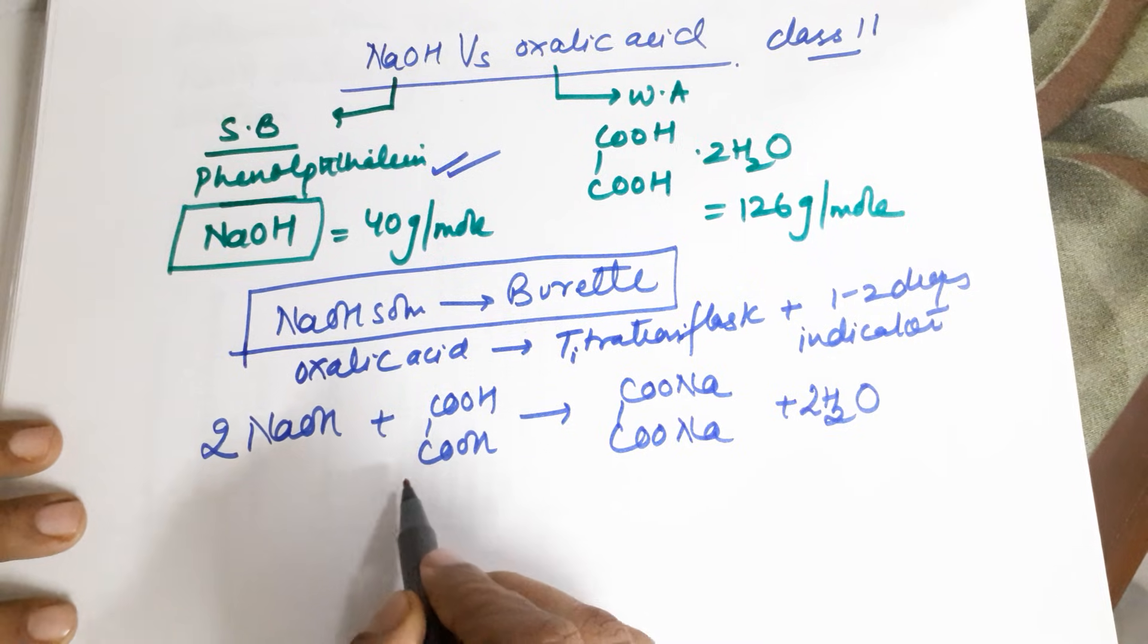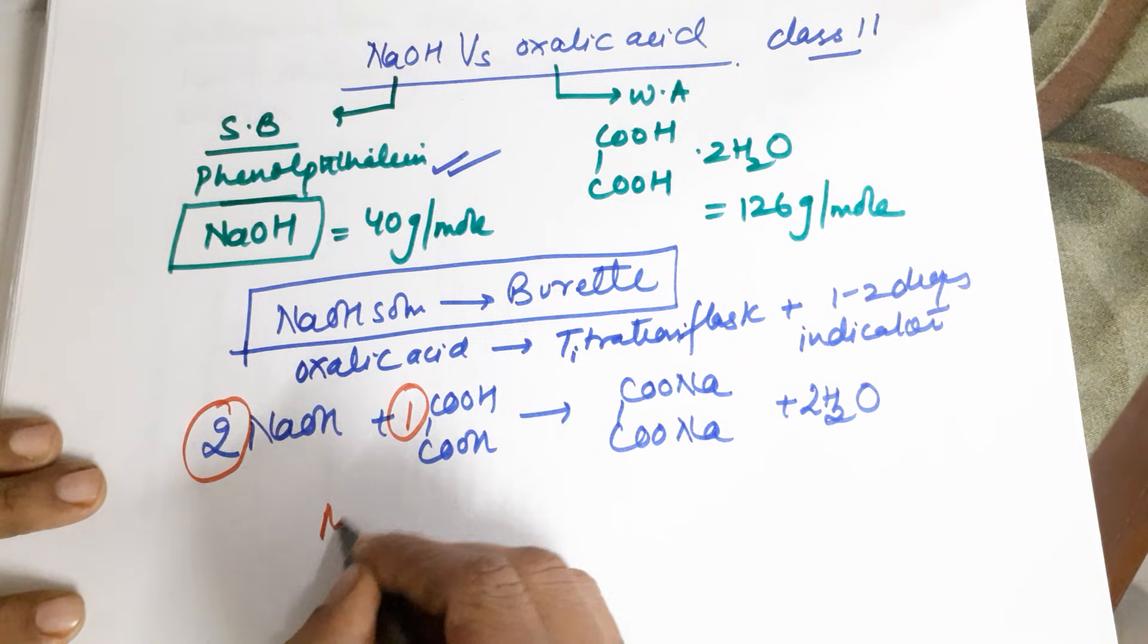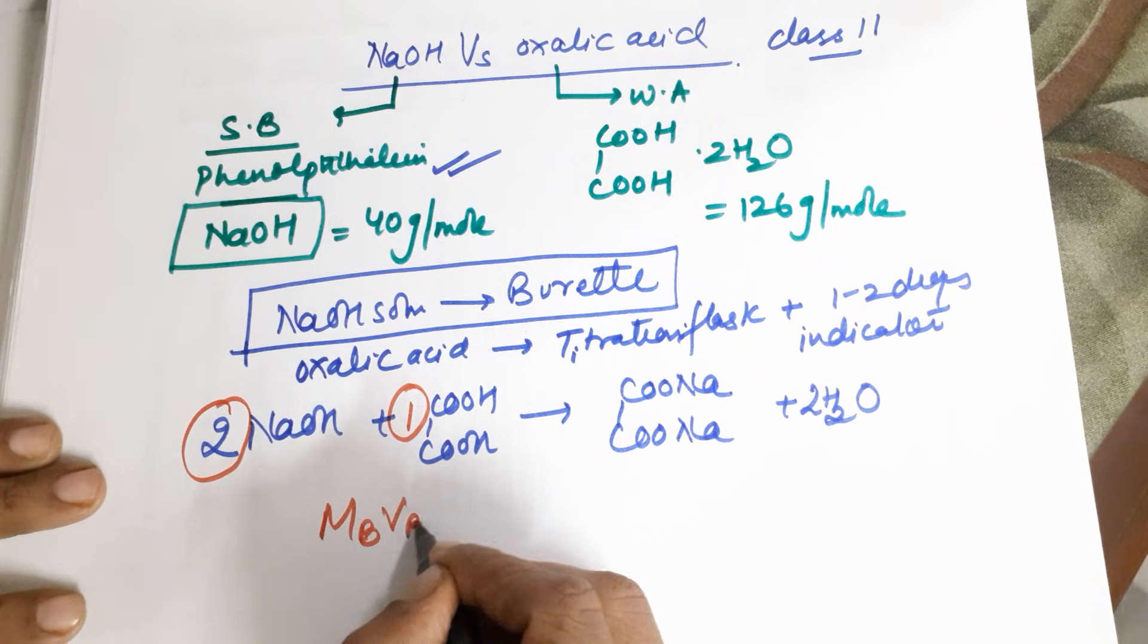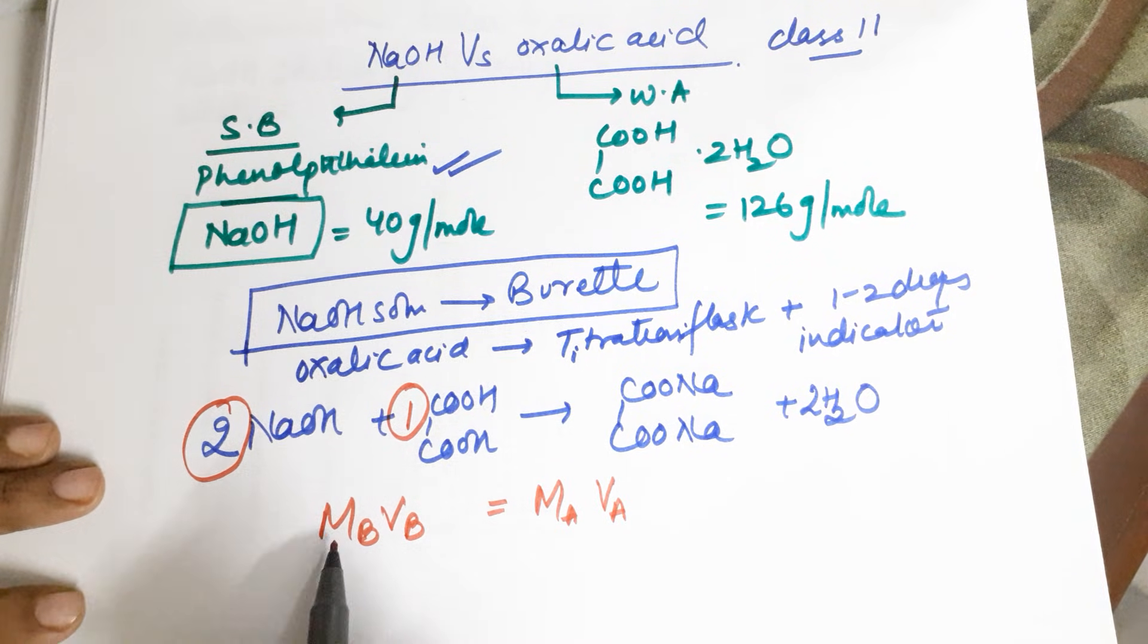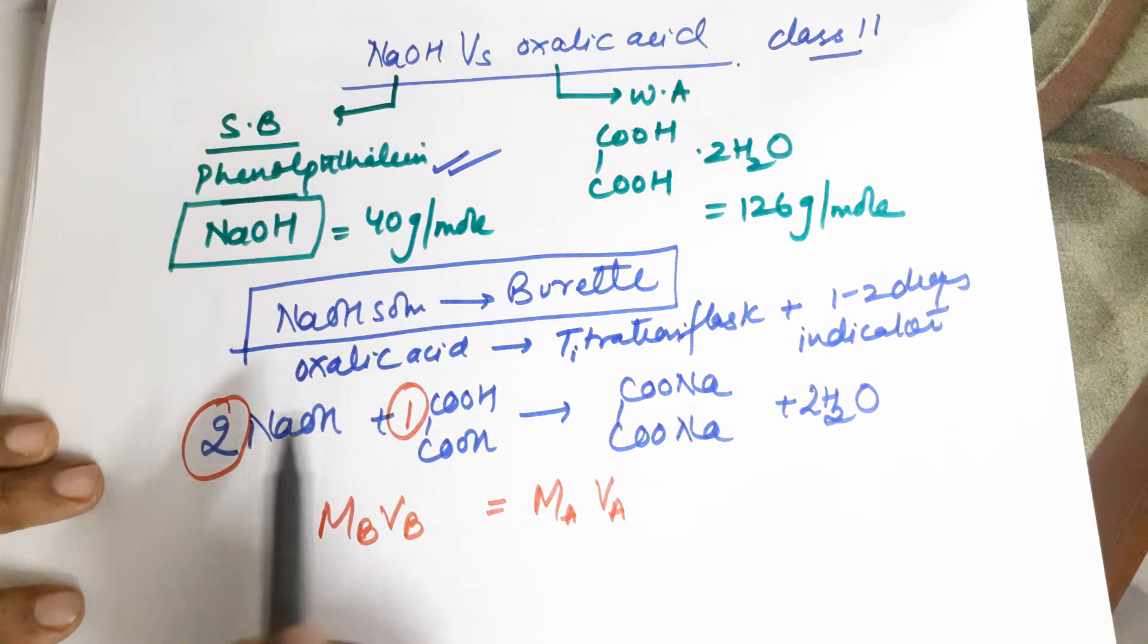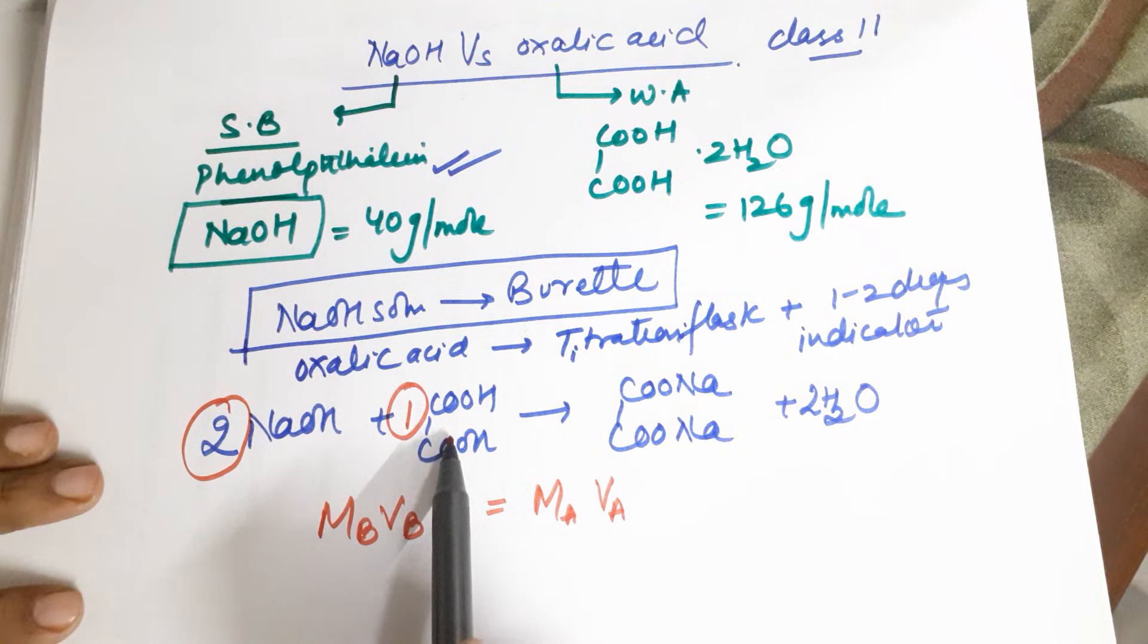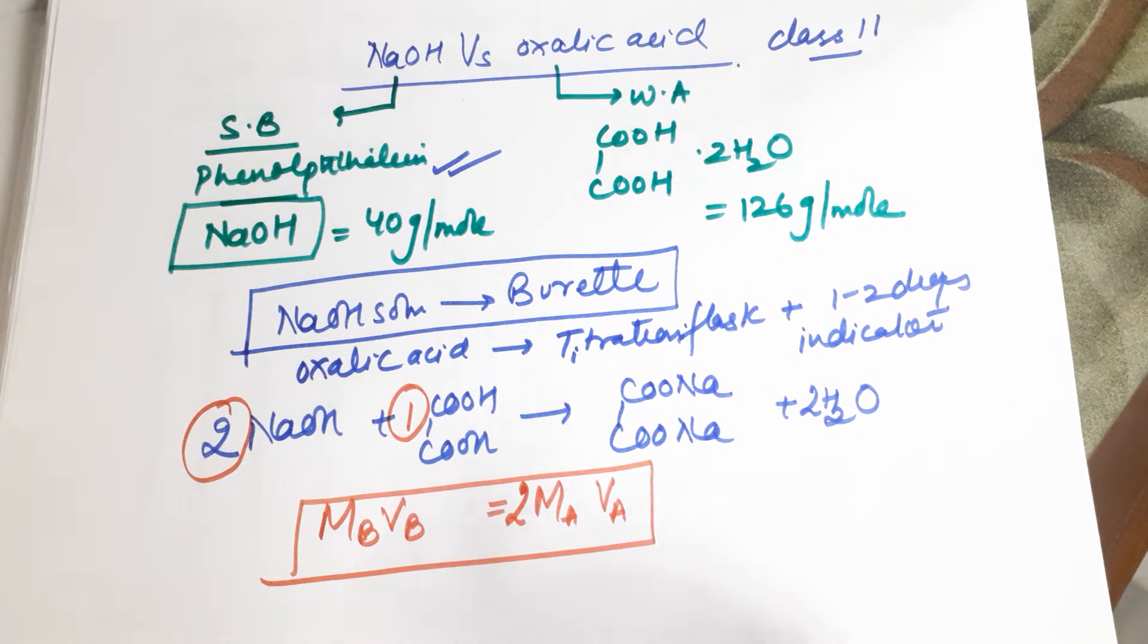In this particular titration, the formula that we use is you have 2 moles here, you have 1 mole here. So your ratio comes out to be molarity of the base into volume of the base is equal to molarity of the acid into volume of the acid, where moles of the base is 2 moles, whereas moles of the acid is 1 mole. So the moles of the base are twice as compared to the moles of the acid. Moles of the base is twice the moles of the acid is the formula to be used.